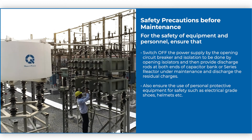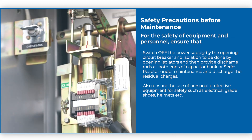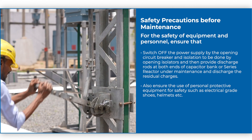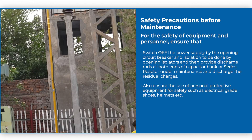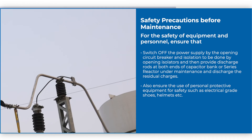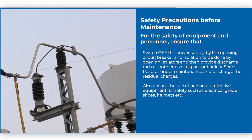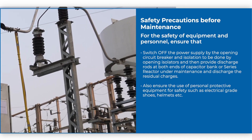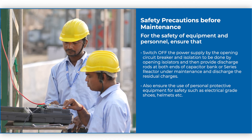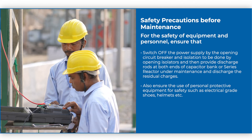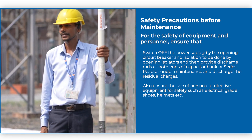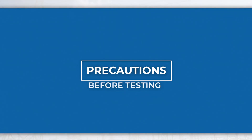Safety precautions before maintenance: for the safety of equipment and personnel, ensure that the power supply is switched off by opening the circuit breaker. Isolation shall be done by opening the isolators, and then provide discharge rods at both ends of the capacitor bank or series reactor under maintenance and discharge the residual charges.